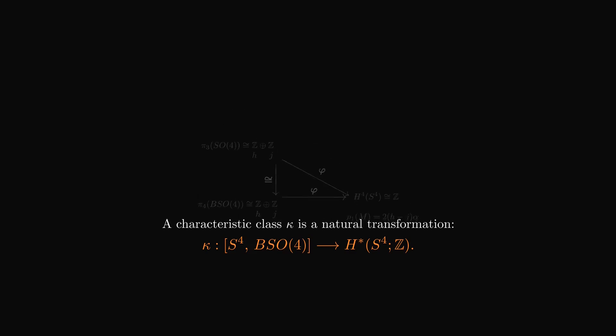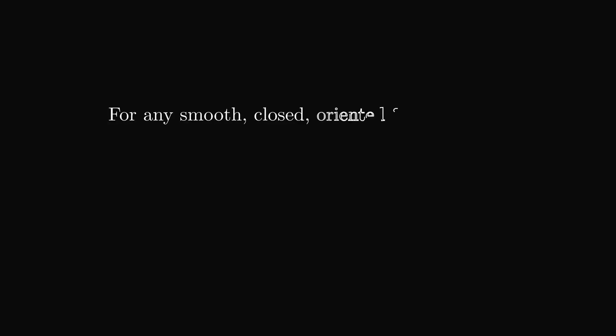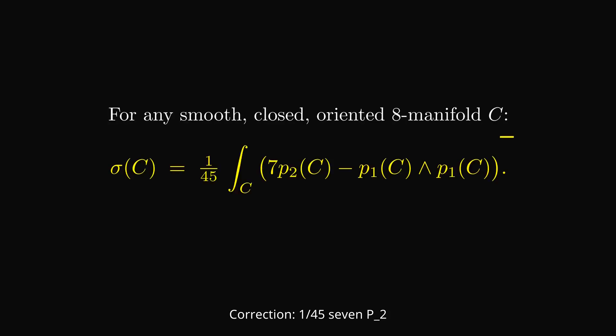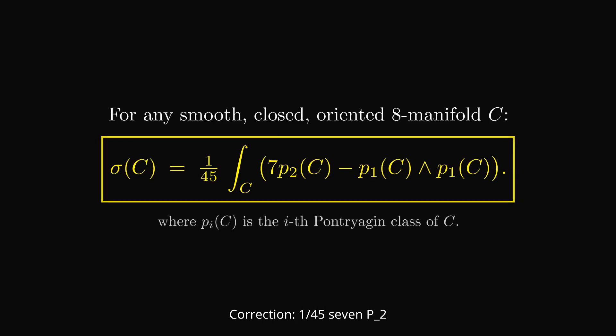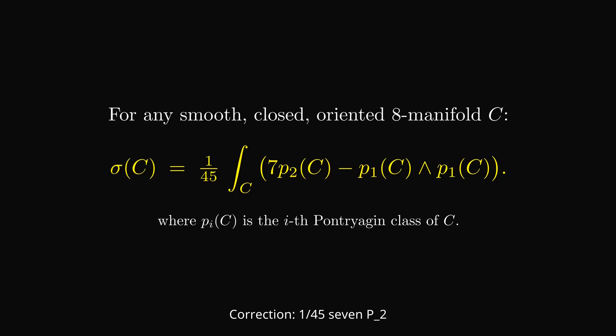To go further, we need to bring the Hirzebruch signature theorem. For any smooth, closed, oriented 8-dimensional manifold, the signature equals 1 over 45 times 2nd Pontryagin class minus squared first Pontryagin class. This gives us a powerful invariant of smooth structures in dimension 8.